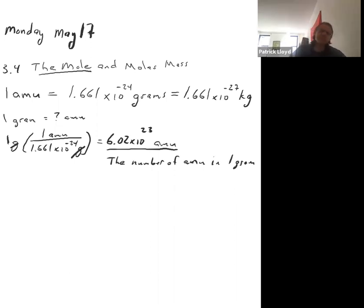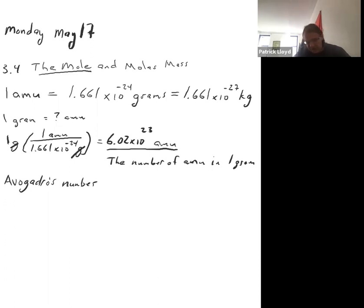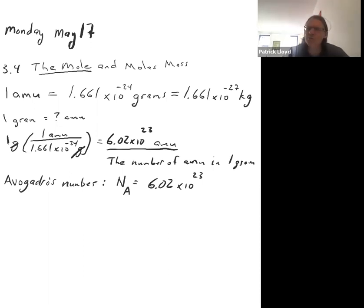We're going to call that number Avogadro's number — sometimes called the Avogadro number. The symbol is N_A, and it's 6.02×10²³. This is the number of AMUs in one gram of a substance, and that turns out to be very useful, as we'll see in Section 3.4.